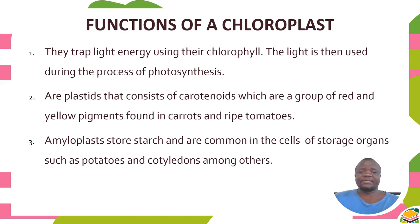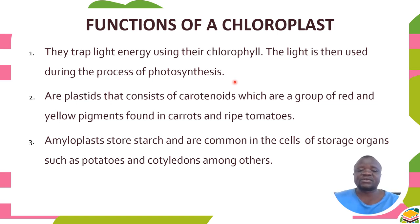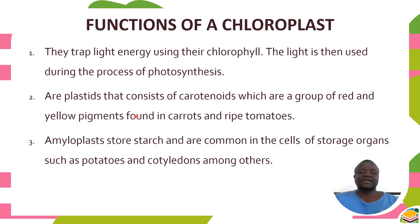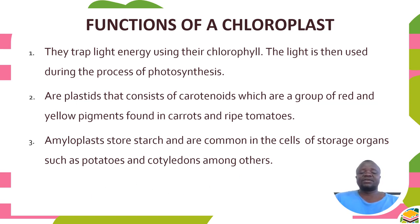The function of the chloroplast is to trap light energy using chlorophyll, which is used during the process of photosynthesis — light is a necessary condition for photosynthesis. Chloroplasts are plastids that include carotenoids, which are red and yellow pigments found in carrots and some ripe tomatoes. We also have amyloplasts, which store starch and are common in cells of storage organs such as potatoes.